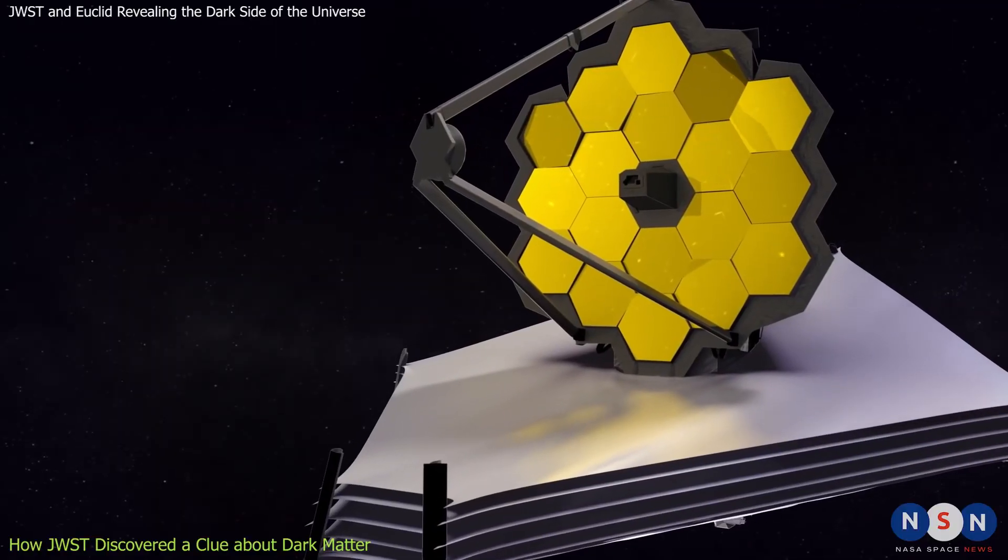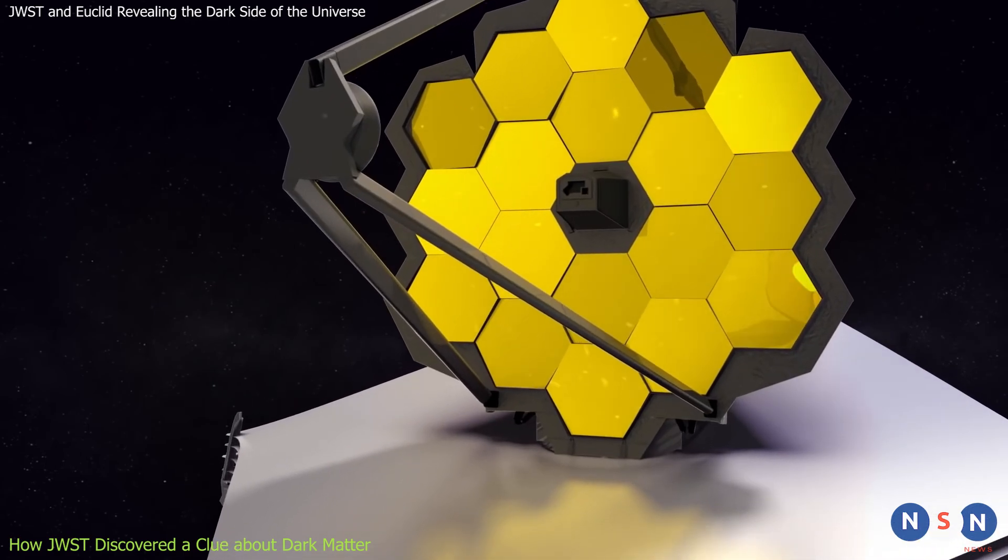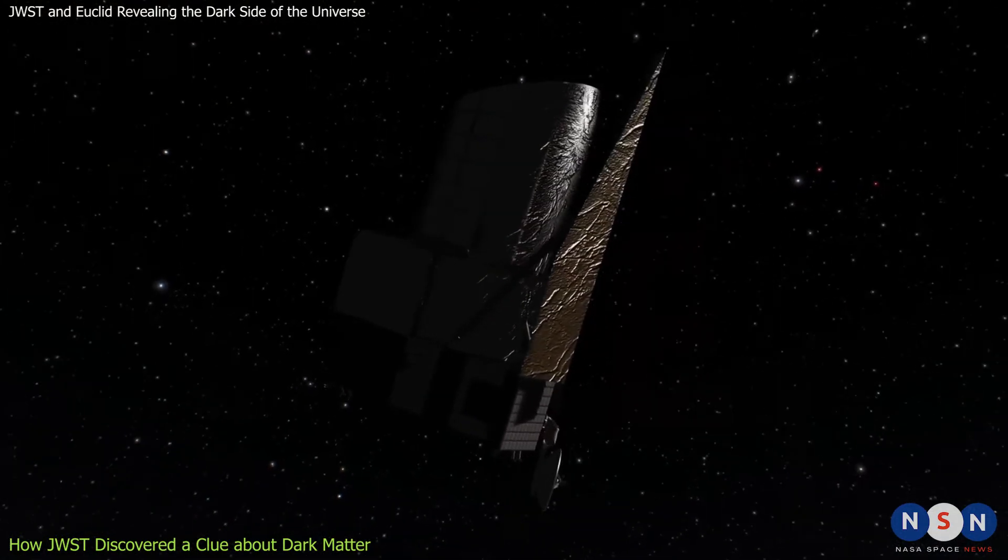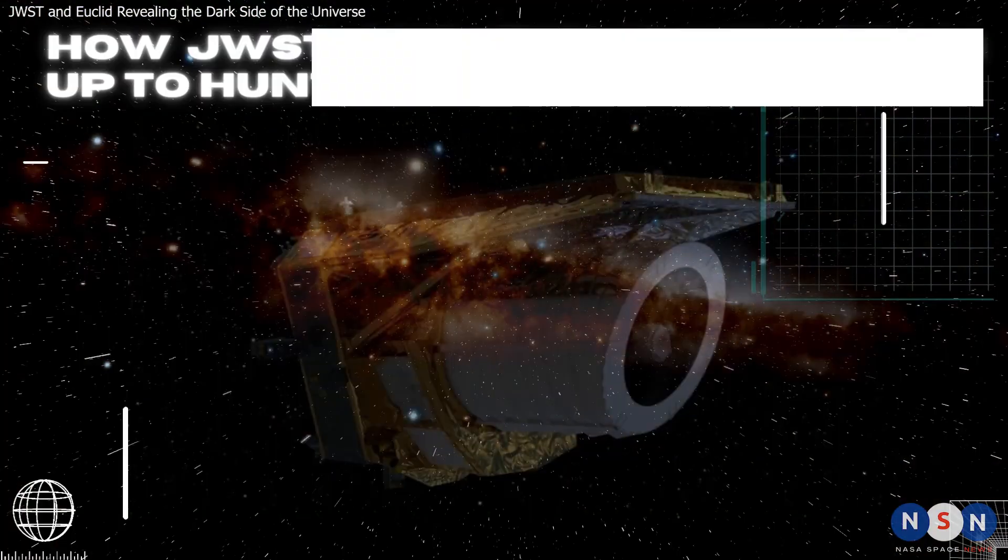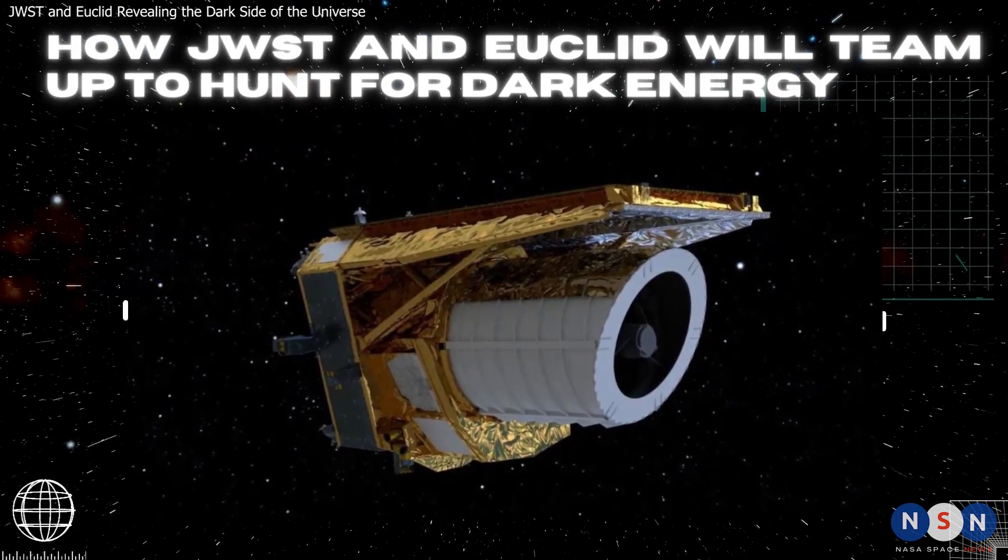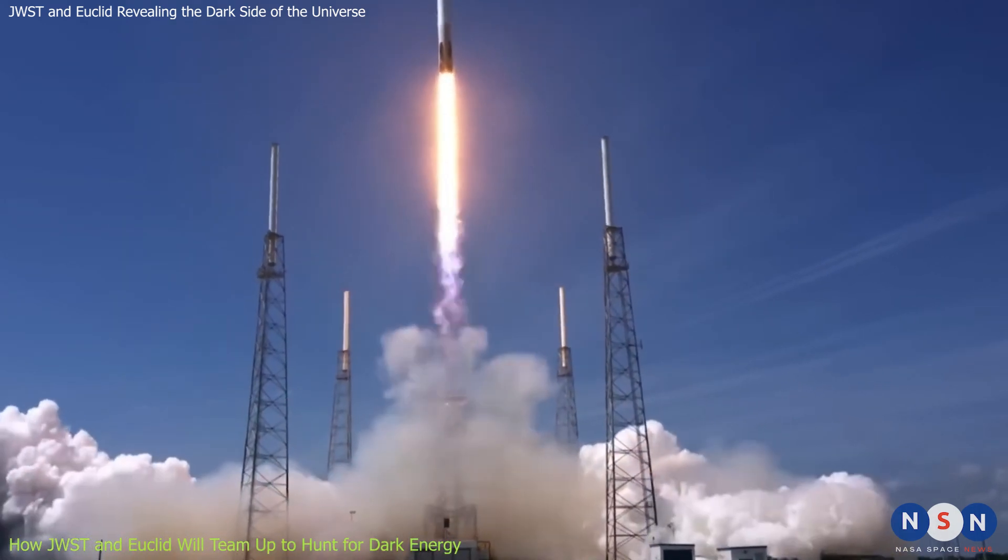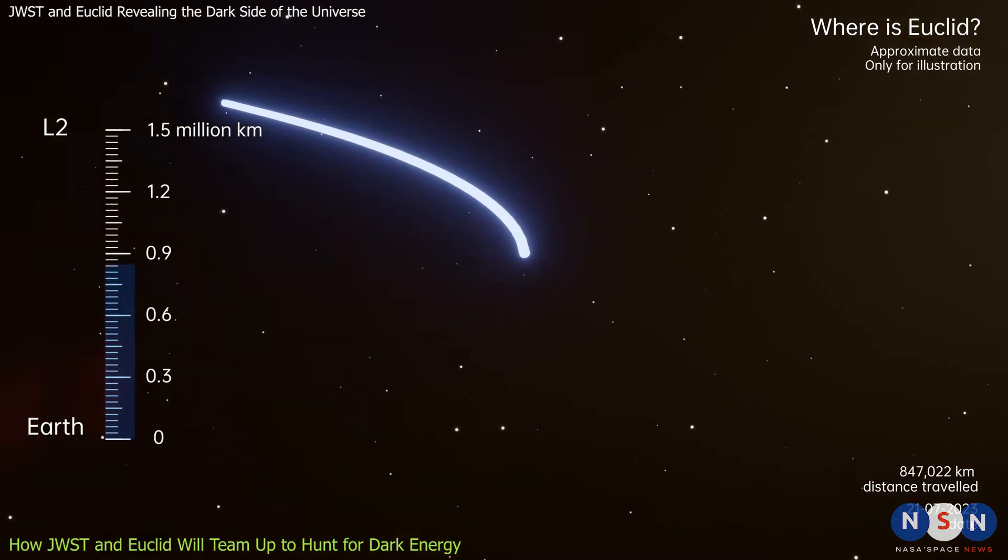But James Webb is not the only space mission that will help us investigate dark matter and dark energy. There is another mission that will complement and enhance Webb's capabilities, the Euclid spacecraft. The Euclid spacecraft is a European mission that was launched in June 2022 and reached its orbit around L2, the same point as James Webb, in August 2022.